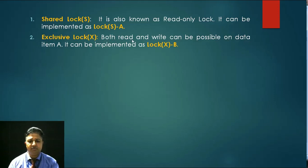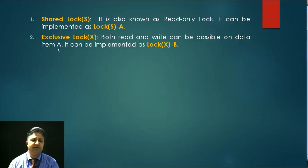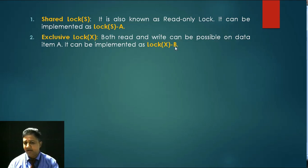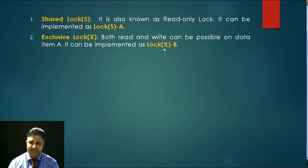The second type is called exclusive lock, represented by X. With an exclusive lock, both read and write operations are possible on a data item. For example, it can be implemented as lock-X(B), where B is a data item on which we implement an exclusive lock. This means data item B can both be read and written.